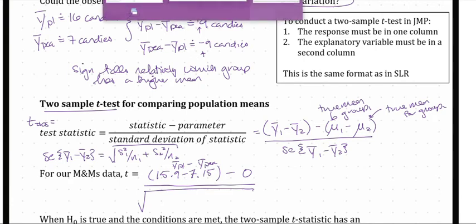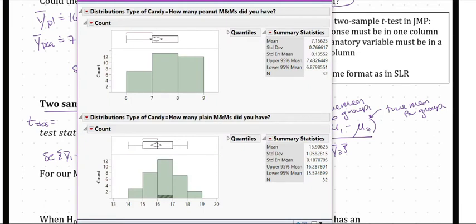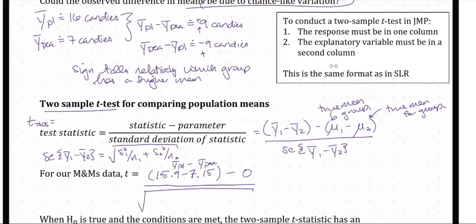For the standard error, I compute the square root of (S₁² / N₁ + S₂² / N₂). My summary statistics provide standard deviations, not variances. For plain, the standard deviation is 1.06; for peanut, it's 0.77; and both groups have a sample size of 32. So I compute: √(1.06² / 32 + 0.77² / 32). Pulling all of that together gives a t-observed statistic of 37.78, and that's what we saw in class.